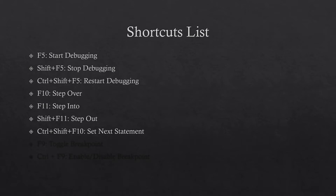The next one is Ctrl+Shift+F10, that is Set Next Statement. There might be scenarios where you want to skip a few lines and go to, say, the tenth line from where the current debugger pointer is, or you want to go to a previous line. What you do is place your cursor on that particular line and press Ctrl+Shift+F10 — it will move the debugger pointer to that line and your debugging will continue from there.